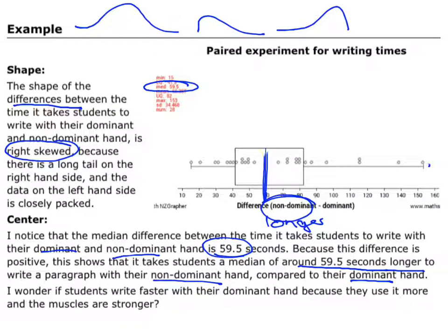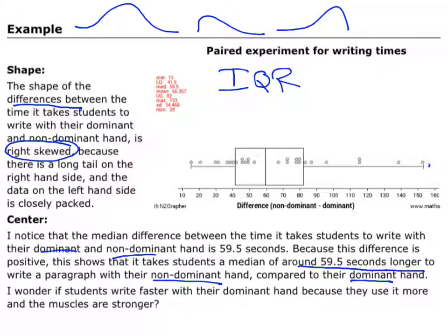Now, another thing that I want to do is look at the spread of the data. So in terms of the spread of the data, we want to think about interquartile range. We want to think about the distance from the upper quartile to the lower quartile.